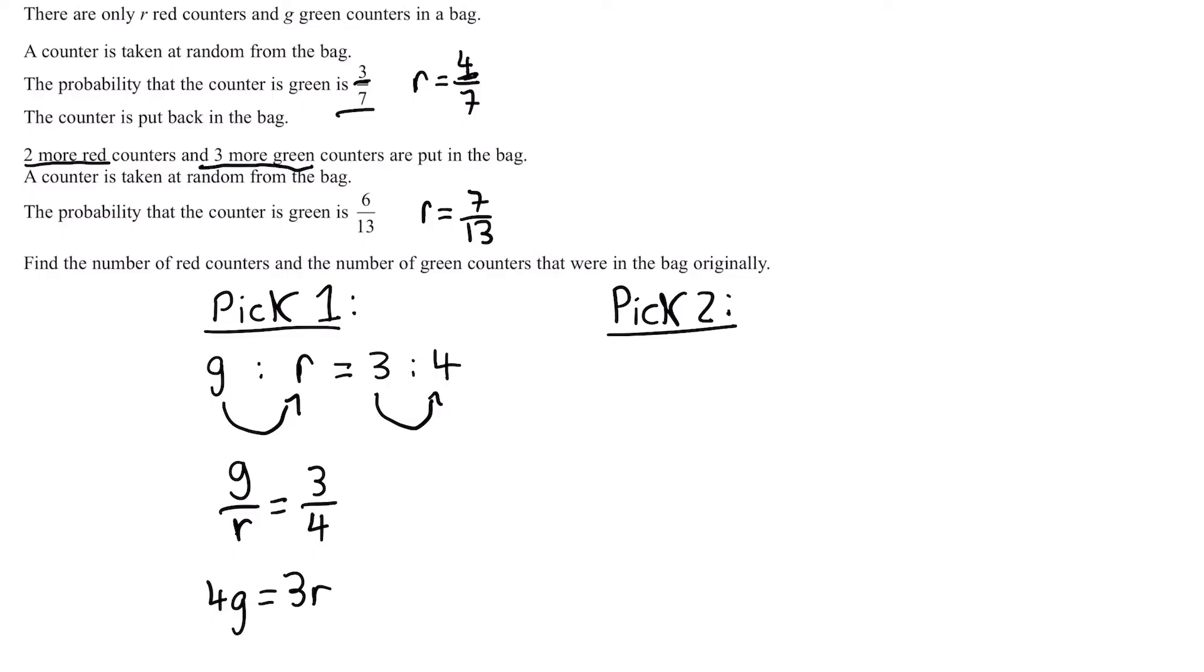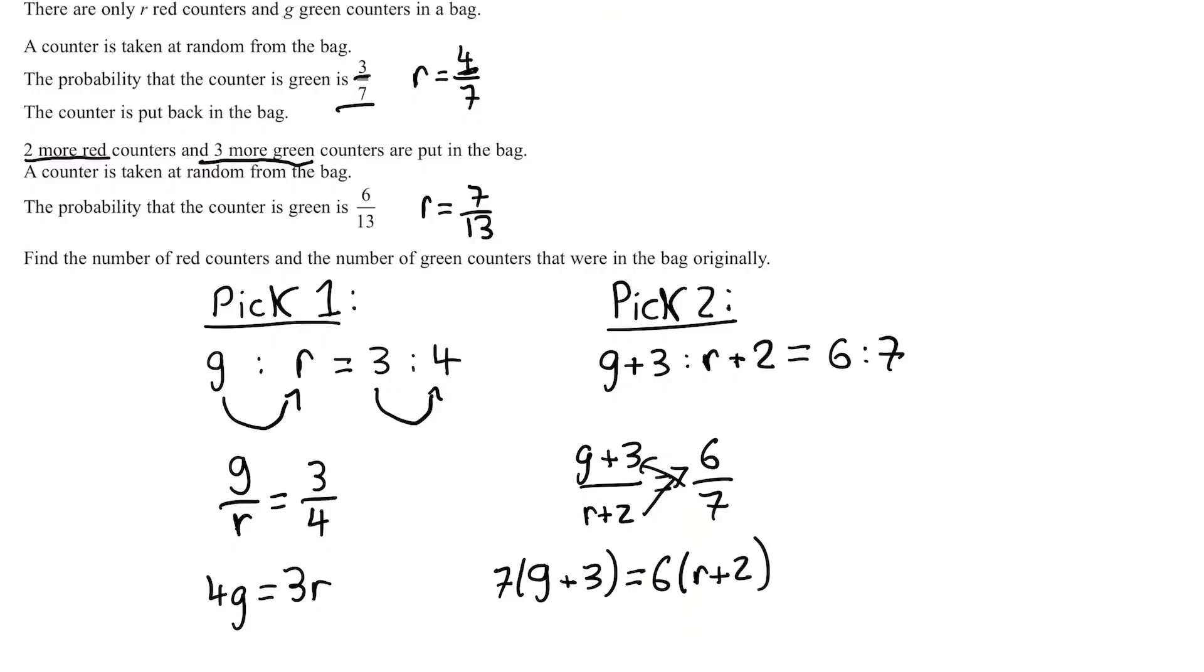Let's leave it for now and look at the second pick. For the second pick, we have the green counters and we're adding three to it, and the red counters with two more added. This ratio is equal to 6 to 7. Similarly, we divide like last time. We have (g+3)/(r+2) equals 6/7. Multiply by 7 and (r+2), so we have 7(g+3) equals 6(r+2). Expanding, we get 7g + 21 equals 6r + 12. Simplifying, taking away 12 from both sides, we have 7g + 9 equals 6r.